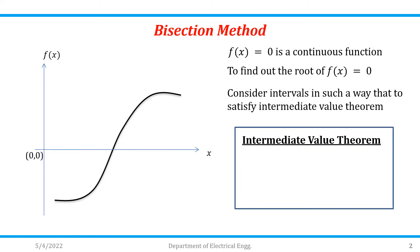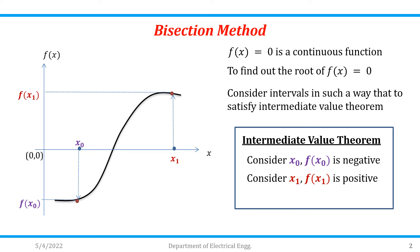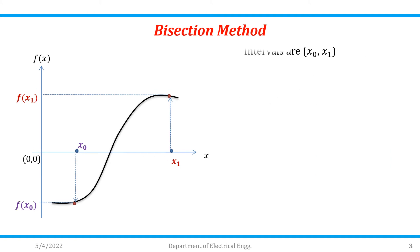Consider a point x0. If we substitute x0 in f(x), we get a negative answer. Consider another point x1 which, when substituted, gives a positive answer. The important condition is that f(x0) multiplied by f(x1) should be less than 0. Let the interval be [x0, x1].